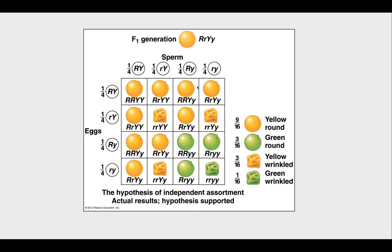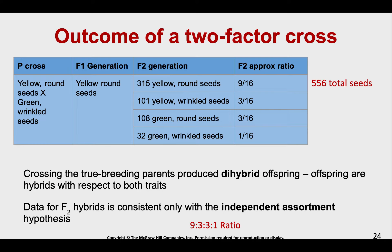When Mendel did this, these are the results he gathered. He found that the data for the F2 hybrids — remember we have the parental generation, the F1, and then the F2 — was consistent with an independent assortment hypothesis. Because he always noticed that the ratio of phenotypes would be a 9 to 3 to 3 to 1.